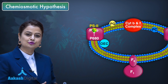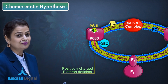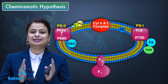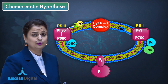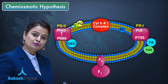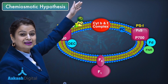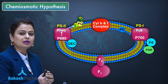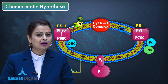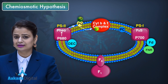Once the electron is extruded from P680, it acquires a positive charge and becomes electron deficient. From pheophytin, the electron is transported to plastoquinone. Plastoquinone accepts both electrons and hydrogen ions — photosystem 2 provides the electron, while hydrogen ions come from the stroma. So plastoquinone accepts electrons from photosystem 2 and hydrogen ions from stroma, becoming reduced. Then the electron is transported to the cytochrome bf complex.